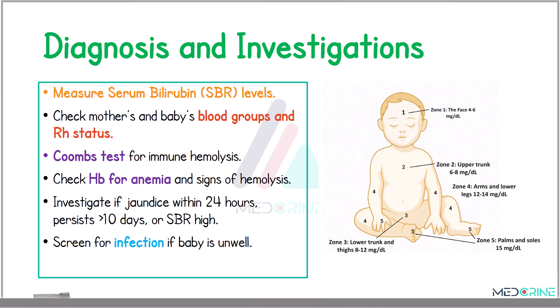If jaundice occurs within 24 hours or persists for more than 10 days, you need to investigate whether it is pathological jaundice and find out the causes. You also need to screen the baby for infection, as sepsis is one of the causes of pathological jaundice.